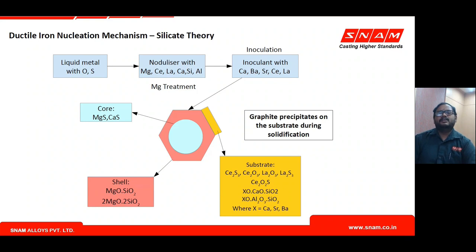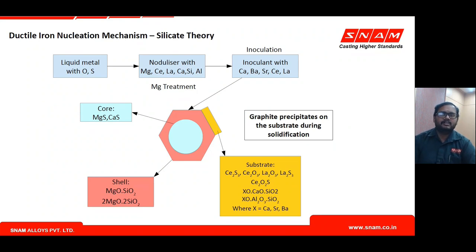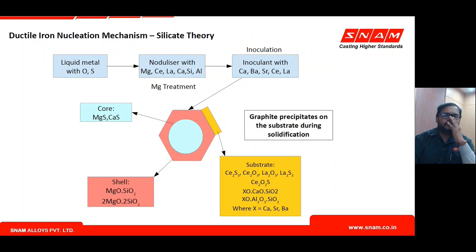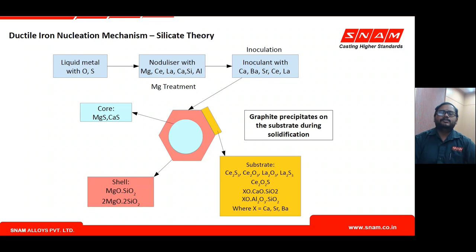This is where inoculating elements come in. They form oxides, oxysulfides, or silicates that sit over the shell and provide good crystallographic compatibility with the precipitating carbon. These two layers together form the nuclei upon which graphite precipitates and grows — first carbon deposits on the substrate, then subsequent carbon deposits on top. This is why an inoculant is needed and magnesium treatment alone is insufficient.